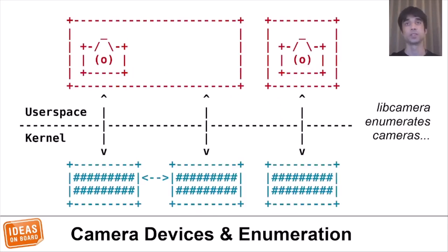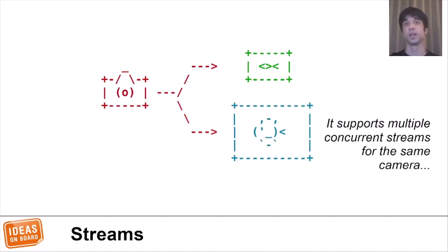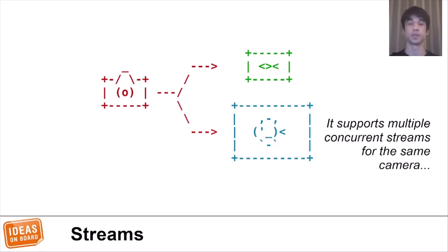One of the requirements for LibCamera was that it had to be able to enumerate cameras and support using multiple cameras concurrently. Another is that it had to support multiple concurrent streams for each camera with different resolutions and formats. This way, an application can have a smaller resolution stream for preview while recording a higher quality stream, with both streams originating from the same camera — of course, only if the camera supports it.